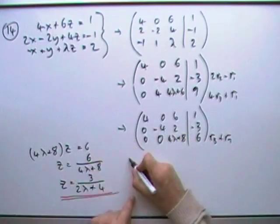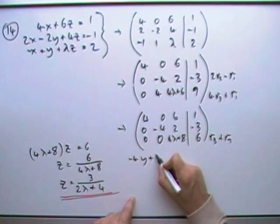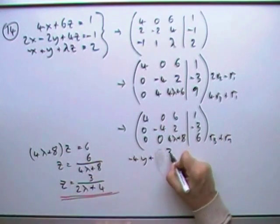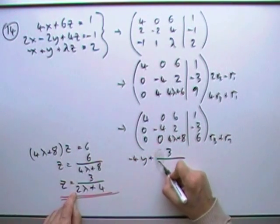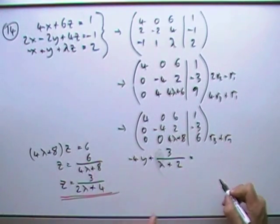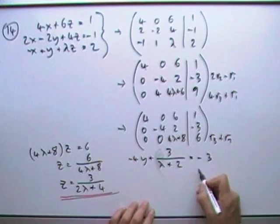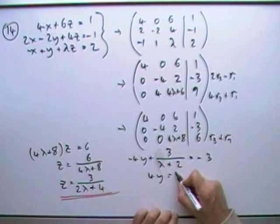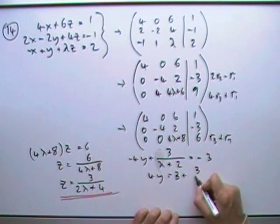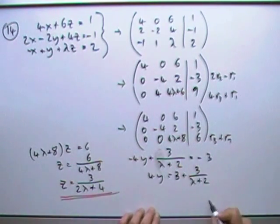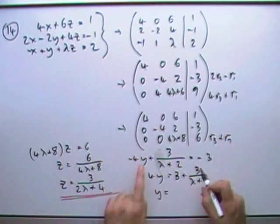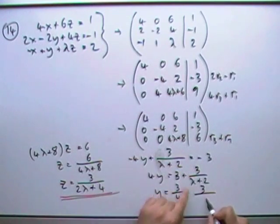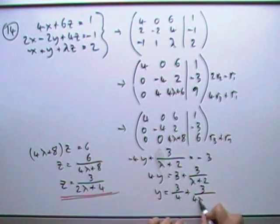So that next line would be -4y plus 2 lots of that. So 2 lots of that would half the bottom. So plus 3 over λ + 2 equals -3. Take the 4 over that way. So 4y would be 3 plus 3 upon λ + 2, and then dividing by that 4 would be 3 over 4 times 4λ + 8 again, doesn't it?